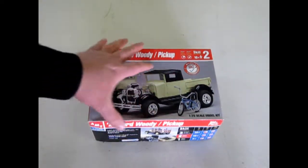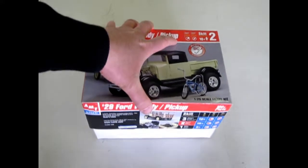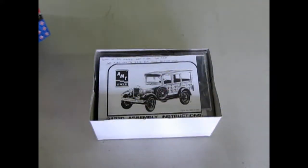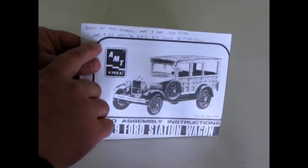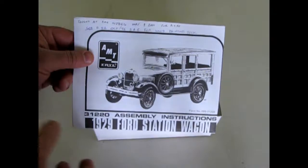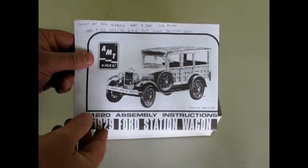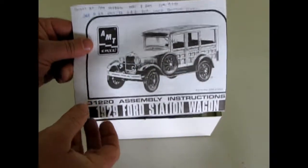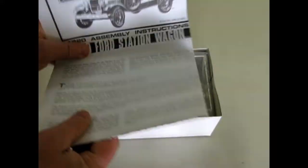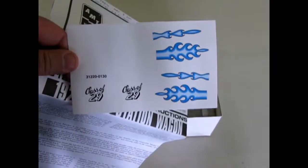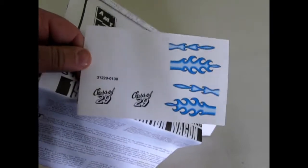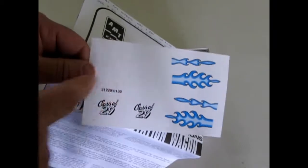Now this is an old Buyer's Choice model that came out back in early 2001. I used to write on where I got the model kit right on my instructions and I bought this one at PM Hobbies in Calgary on May 9, 2001. So this is a cool kit with some nice old decals in it. You get the class of 29 as well as these blue flames and in here are some white pinstriping. You can't really see it until you do the decal.